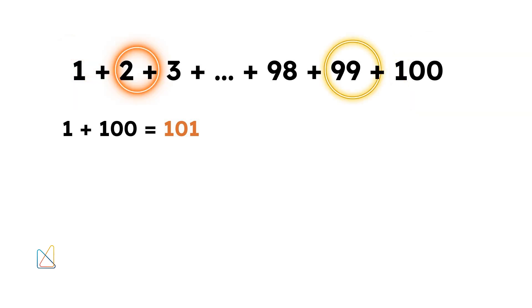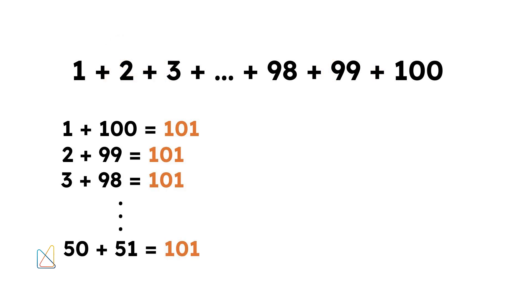Then he took the second number, 2, and the second to last number, 99. Again, the sum is 101. This pattern continued for each pair of numbers.